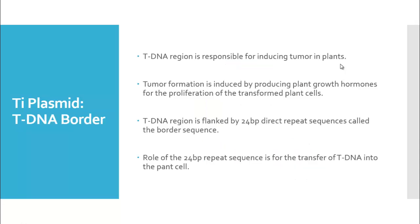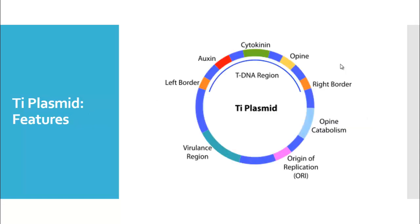The T-DNA region is responsible for inducing tumor in plants, and tumor formation is induced by producing plant growth hormones for the proliferation of the transformed plant cells. The T-DNA region is flanked by a 24 base pair direct repeat sequence called the border sequence. The role of this 24 base pair repeat sequence is for the transfer of T-DNA into the plant cell.